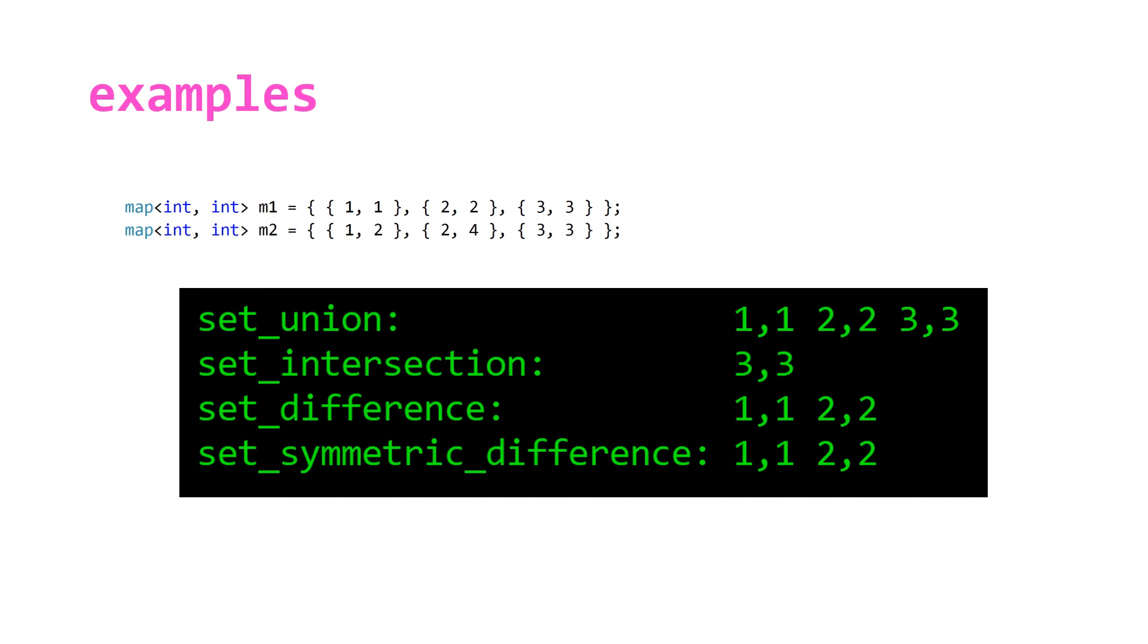I'm not sure how useful this would be, but I guess it's good to know that if you're ever using these set functions with a map, when it identifies differences between the maps or when it's taking the union, it's always going to default to the pairs from the first range.